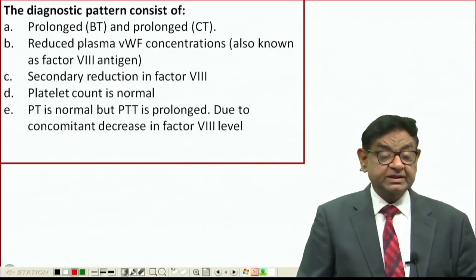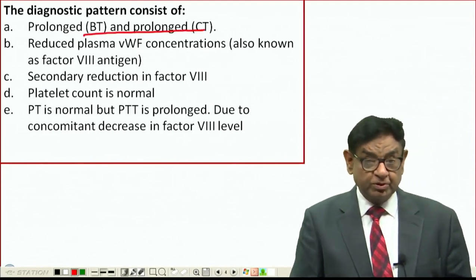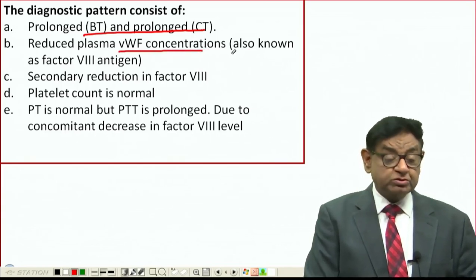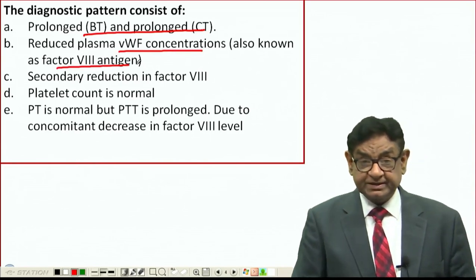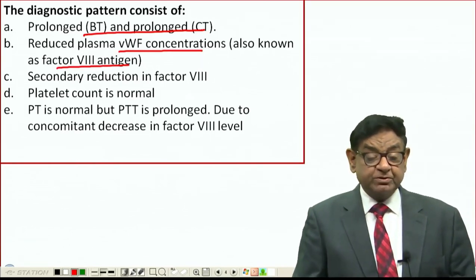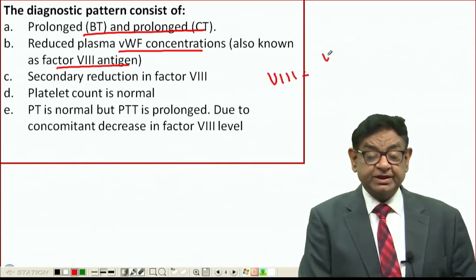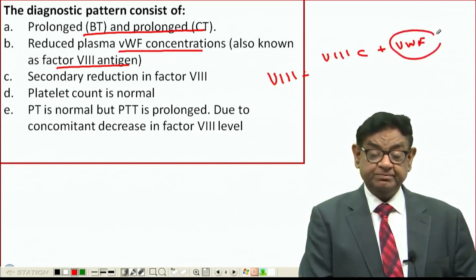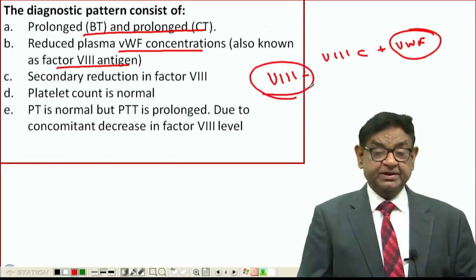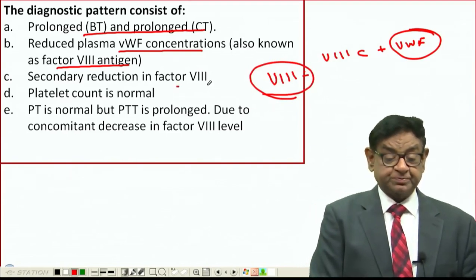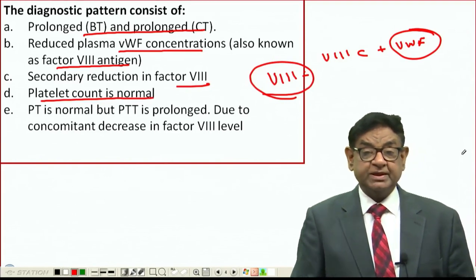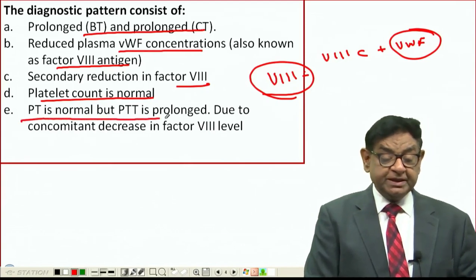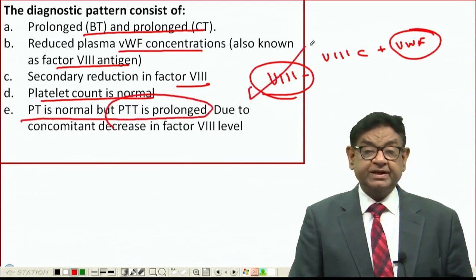To investigate: bleeding time and clotting time are both prolonged. Von Willebrand factor — also known as Factor 8 antigen — is reduced. Factor 8 is made of two components: 8C and von Willebrand factor, so if von Willebrand factor is deficient, there will be secondary deficiency of Factor 8 also. Platelet count is normal — thrombocytopenia is not a feature. PT is normal but PTT is prolonged, due to Factor 8 deficiency.